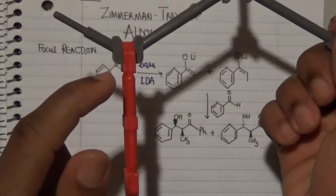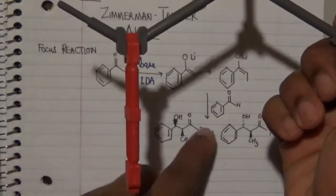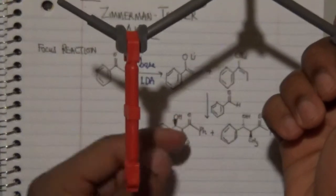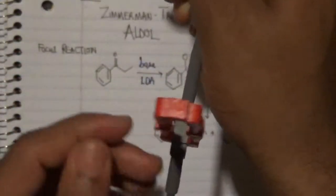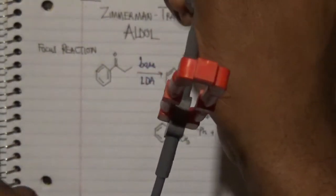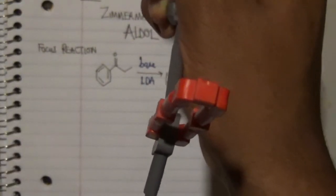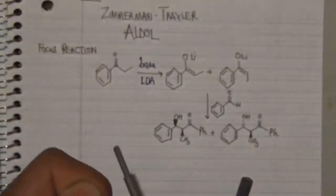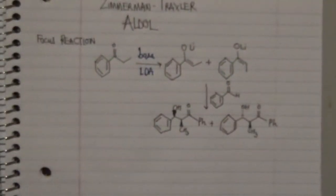Once the enolate double bond acts as a nucleophile, attacking this particular carbon of the aldehyde, we form two side products: one where the oxygen-hydrogen is pointing towards me and the other pointing away from me. Since this is a planar surface, attack can occur from either face of the molecule. By using the Zimmerman-Taxol concept of temperature influence, we can favor one product over the other — either the E enolate or the Z enolate — which I'll discuss in my next video.